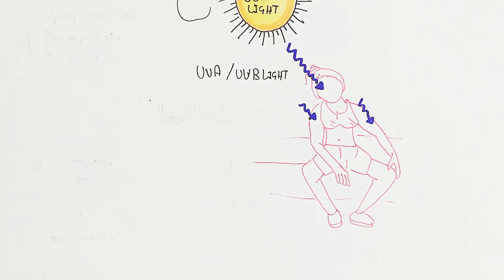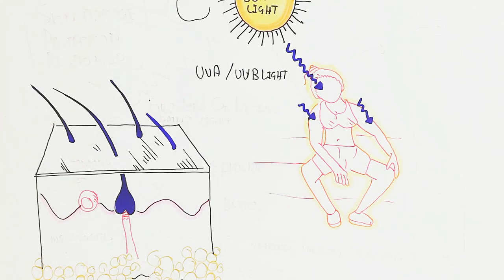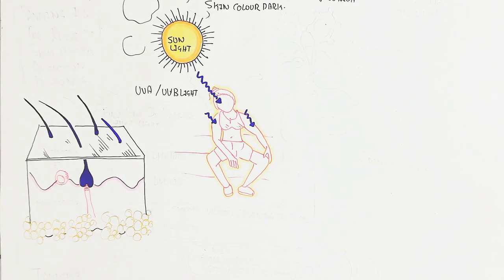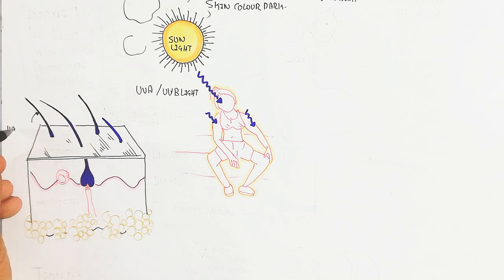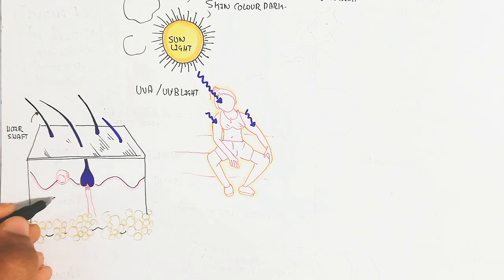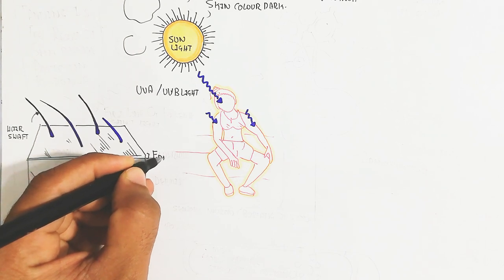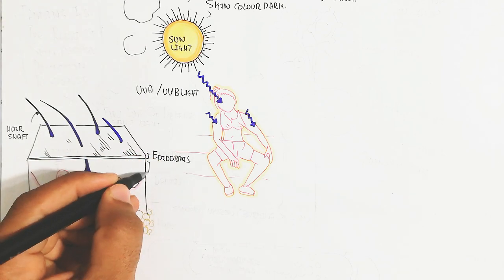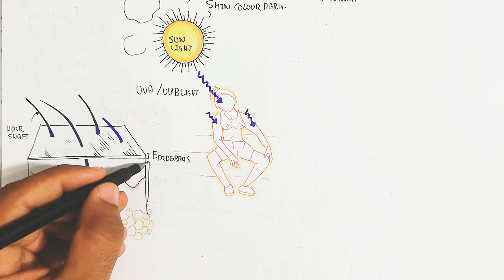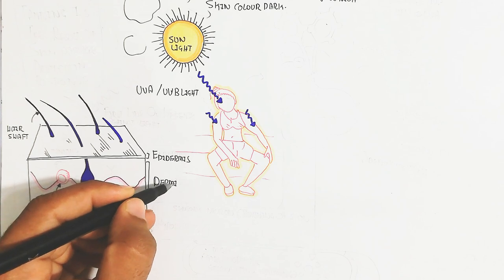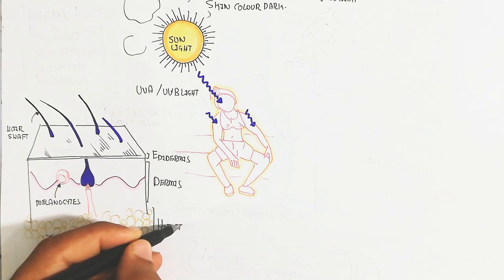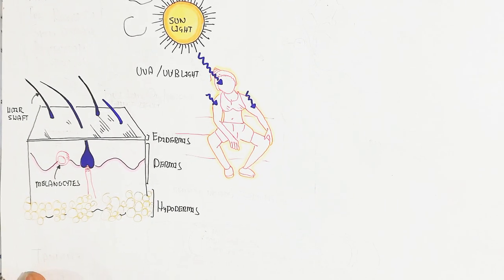When sunlight falls on the skin during sun bathing, it changes the physiology of the skin. The skin contains hair, and the hair is black in color. The skin can be divided into three layers. The melanocytes are present at the end of the epidermis and dermis, and keratinocytes are also present. The hypodermis contains adipose tissue — the fat — also known as the subcutaneous layer, while the cutaneous layer is the epidermis and dermis.